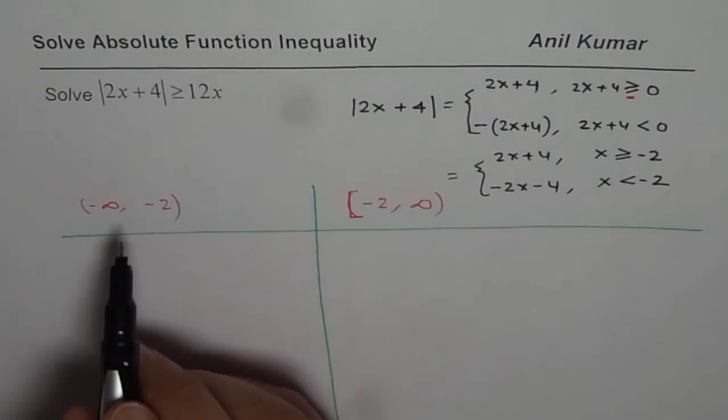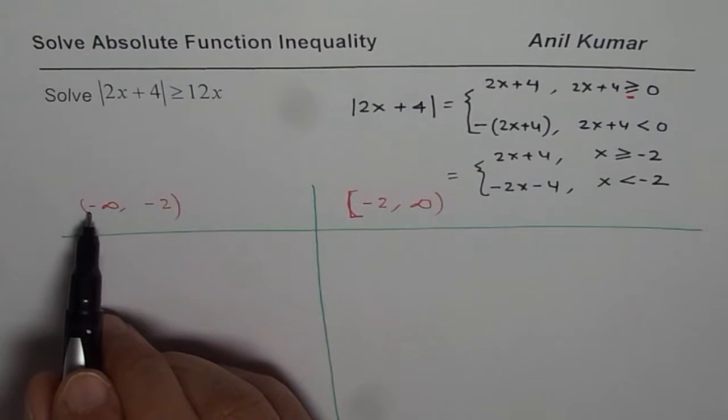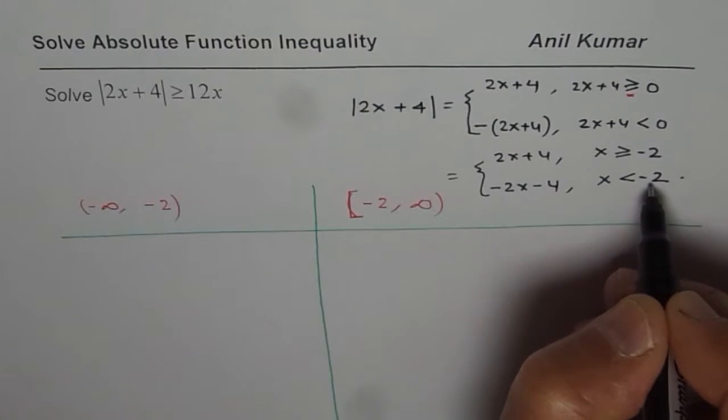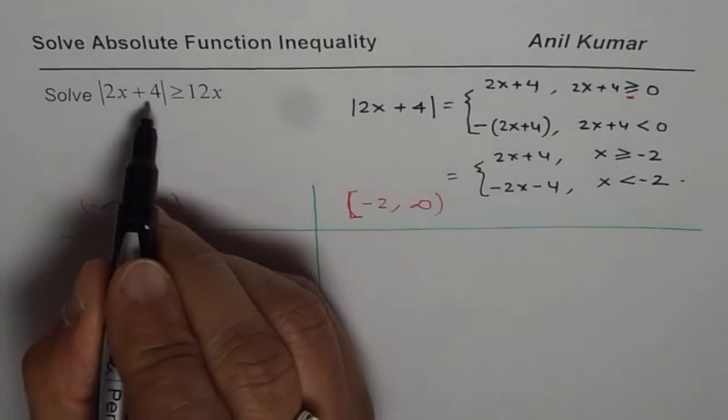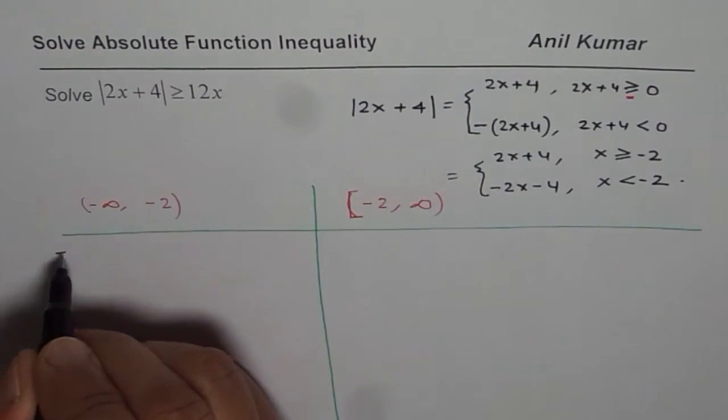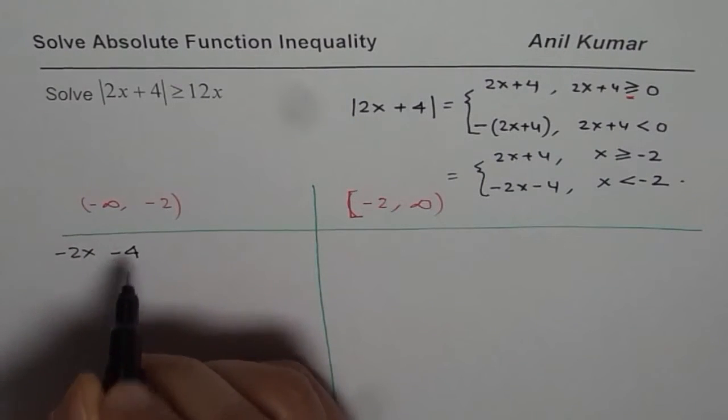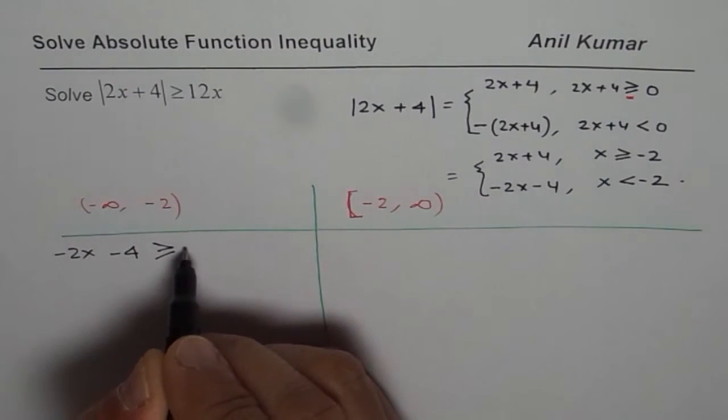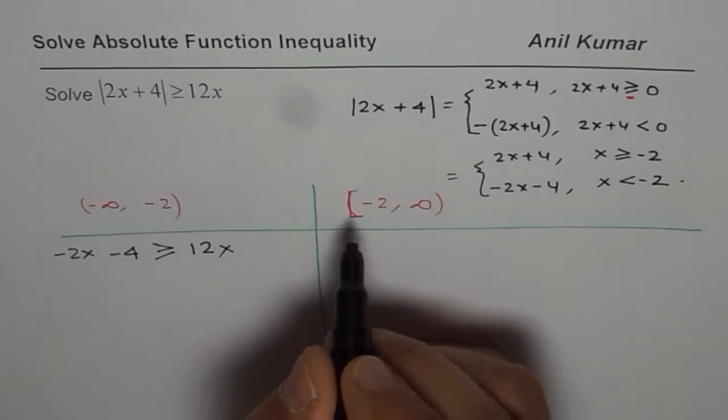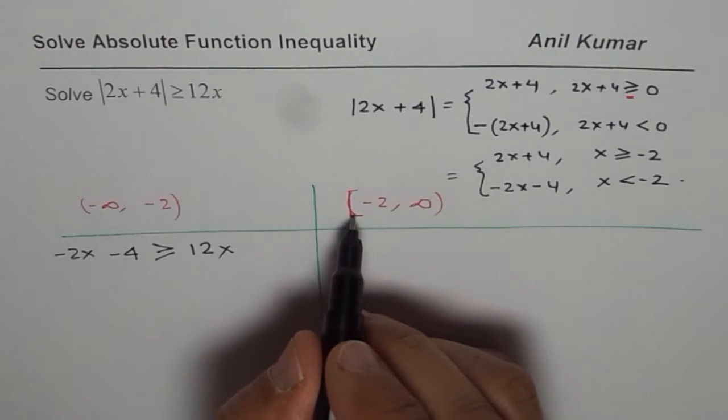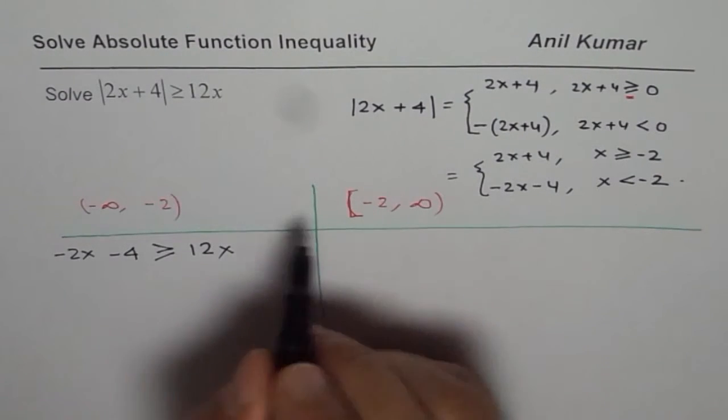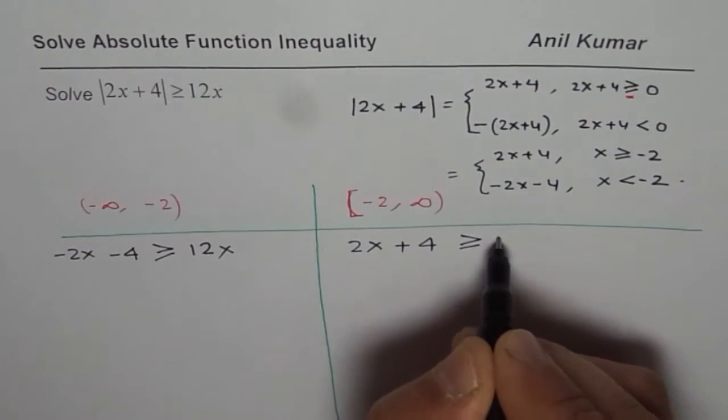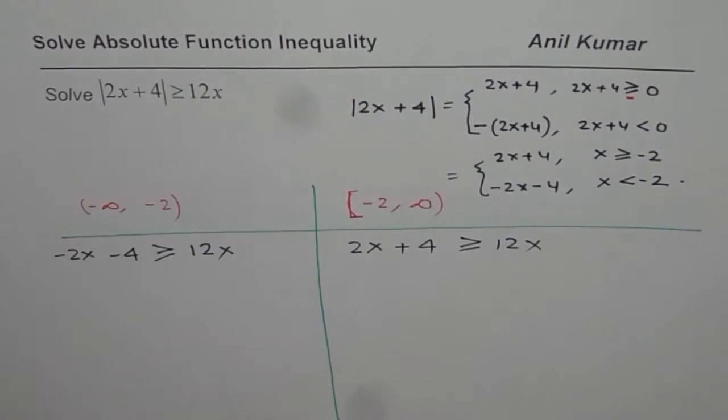Now when the interval is minus infinity to minus 2, that is we are talking about less than minus 2, absolute value of 2x plus 4 could be written as minus 2x minus 4. Therefore the inequality becomes minus 2x minus 4 greater than or equal to 12x. When the interval is greater than or equal to minus 2, in that case 2x plus 4 could be written as 2x plus 4 greater than or equal to 12x.